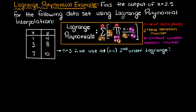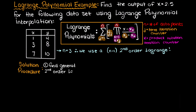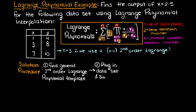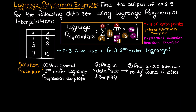Now let's talk about how to solve this problem. We will first begin by using the formula above to develop our general second order Lagrange polynomial equation. Then we will plug in our known discrete data points, simplify our polynomial, and then lastly, once we have the Lagrange polynomial developed, we can plug in the input that we are asked for and finally solve for the output.